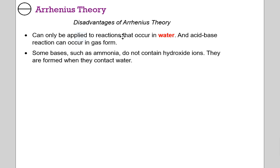Disadvantages: you can only apply Arrhenius theory to things that occur in water. Acids can also occur in the gas phase. Many bases, and some acids, don't contain the operative piece. For example, ammonia doesn't contain hydroxide, but when you expose ammonia to water, it strips hydroxide off the water molecules to form hydroxide.